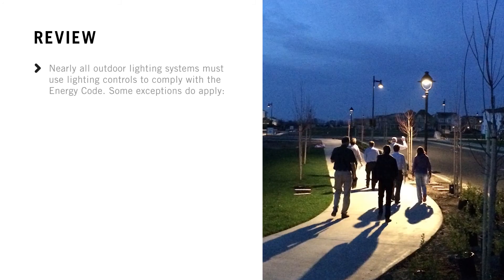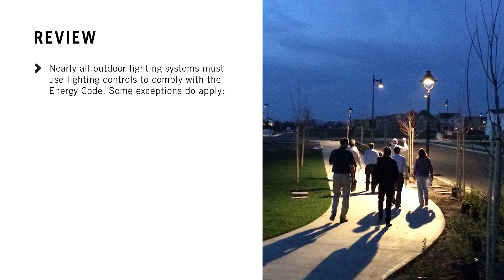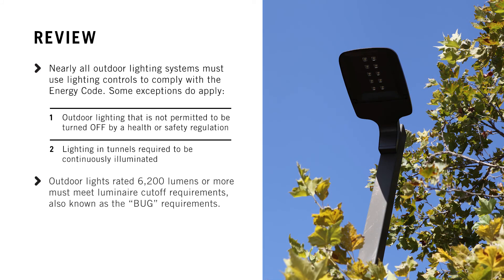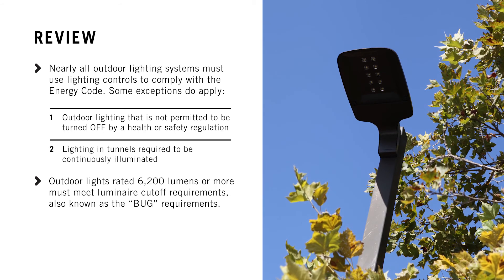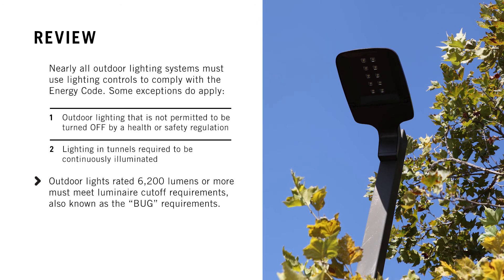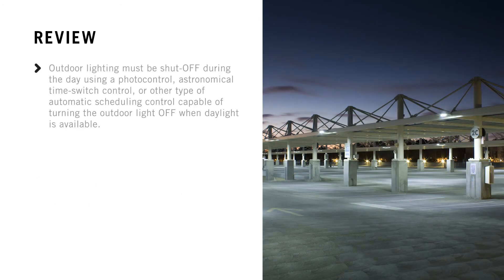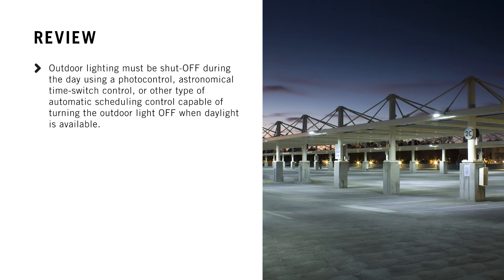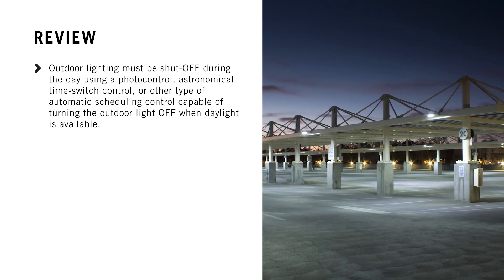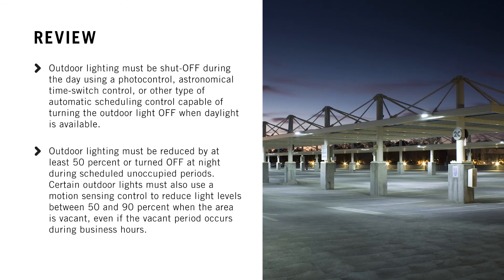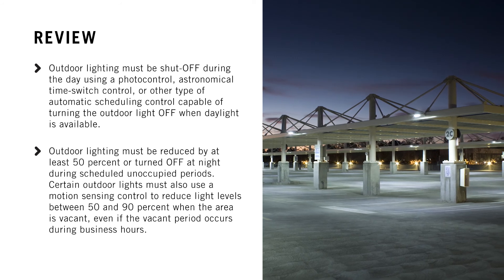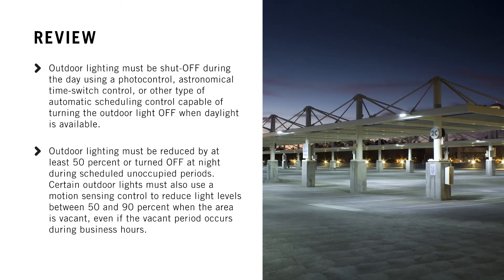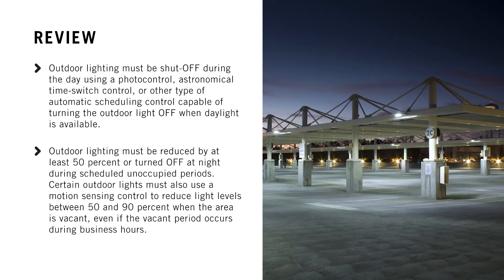Let's review what we've learned. Nearly all outdoor lighting systems must include lighting controls to comply with the Energy Code; some exceptions do apply. Outdoor lights rated 6200 lumens or more must meet luminaire cutoff requirements, also known as the BUG requirements. Outdoor lighting must be shut off during the day using a photo control, astronomical time switch control, or other type of automatic scheduling control capable of turning the outdoor lighting off when daylight is available. Outdoor lighting must be reduced by at least 50 percent or turned off at night during scheduled unoccupied periods. Certain outdoor lights must also use a motion sensing control to reduce light levels between 50 and 90 percent when the area is vacant, even if the vacant period occurs during business hours.